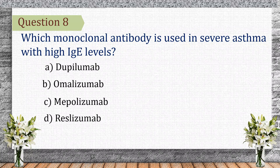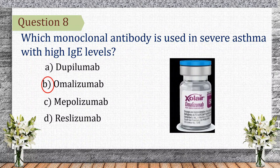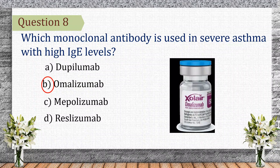Question 8. Which monoclonal antibody is used in severe asthma with high IgE levels? The correct answer is B: omalizumab. Omalizumab is an anti-IgE monoclonal antibody used in severe allergic asthma. Let's see the other choices. Dupilumab targets IL-4/IL-13 for atopic dermatitis and eosinophilic asthma.